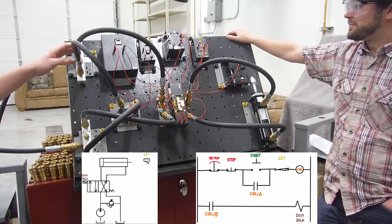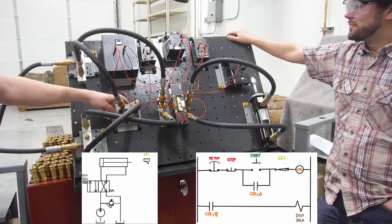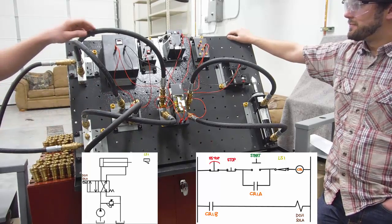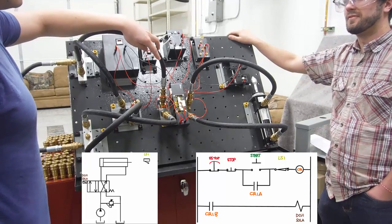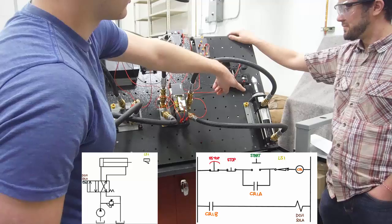The one outlet of our manifold is going to our pressure relief valve, then back to the tank. The other side is going to our single solenoid electrically controlled directional valve for our cylinder.